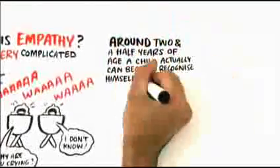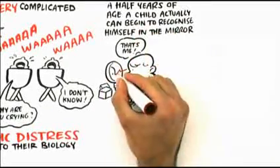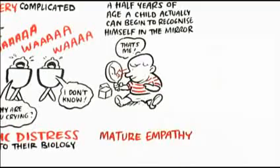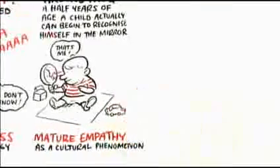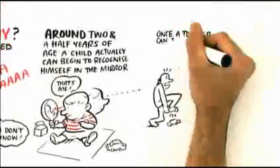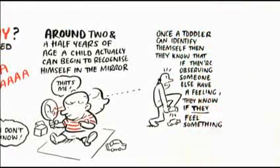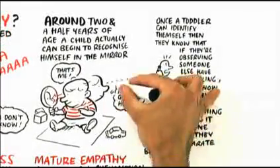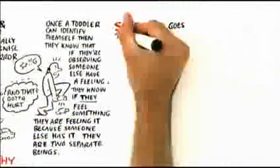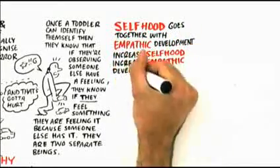Around two and a half years of age, a child actually can begin to recognize himself in a mirror. That's when you begin to mature empathy as a cultural phenomenon. Once a toddler can identify themselves, they know that if they're observing someone else have a feeling, it's because someone else has it. They're two separate beings. Selfhood goes together with empathic development.